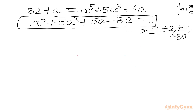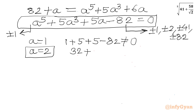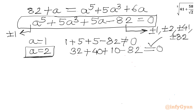The leading coefficient is plus or minus 1 only. Plugging in a equal to 1: 1 plus 5 plus 5 minus 82 is not zero, so we cancel this. Trying a equal to 2: 2 to the power 5 is 32, 2 cubed is 8 times 5 is 40, 2 times 5 is 10, minus 82: 32 plus 40 plus 10 is 82 minus 82 equals zero. So a equal to 2 is satisfied — it is our base solution.